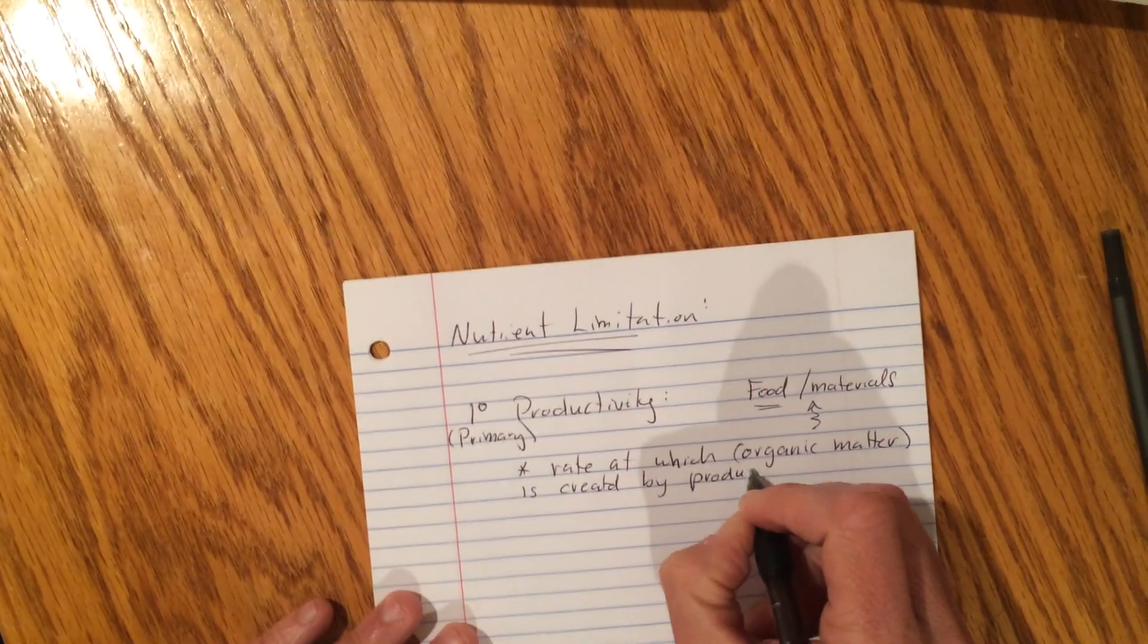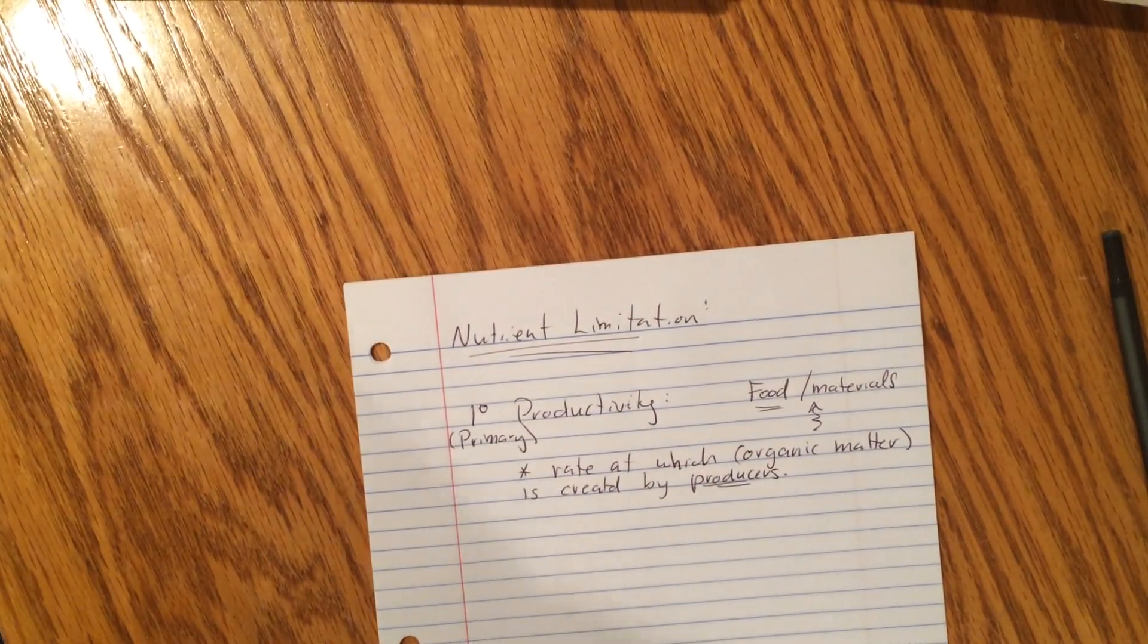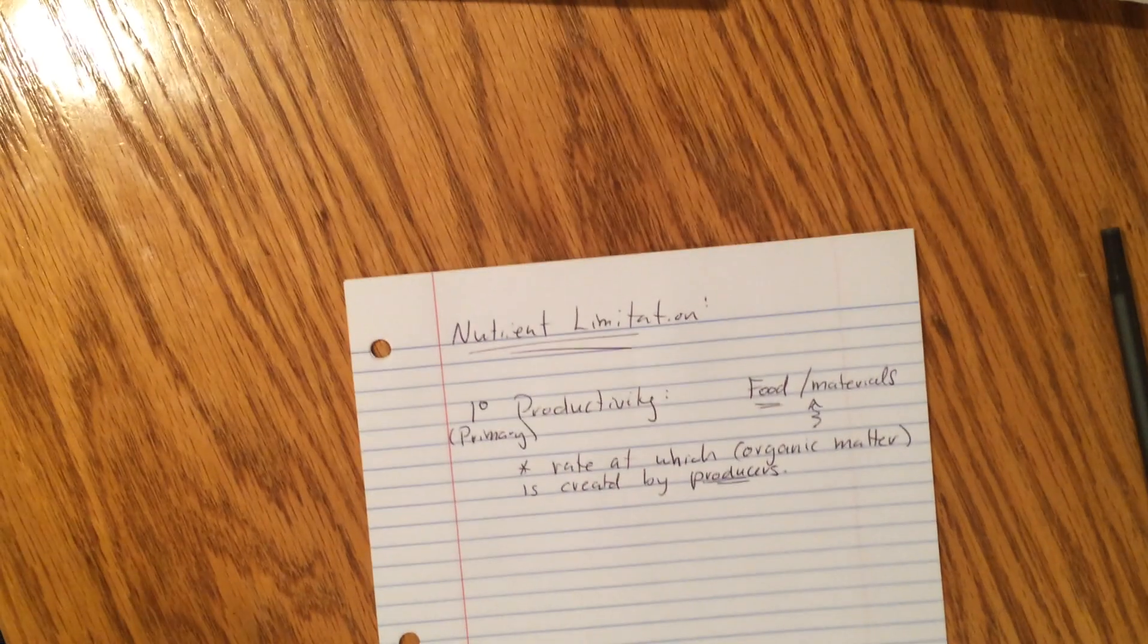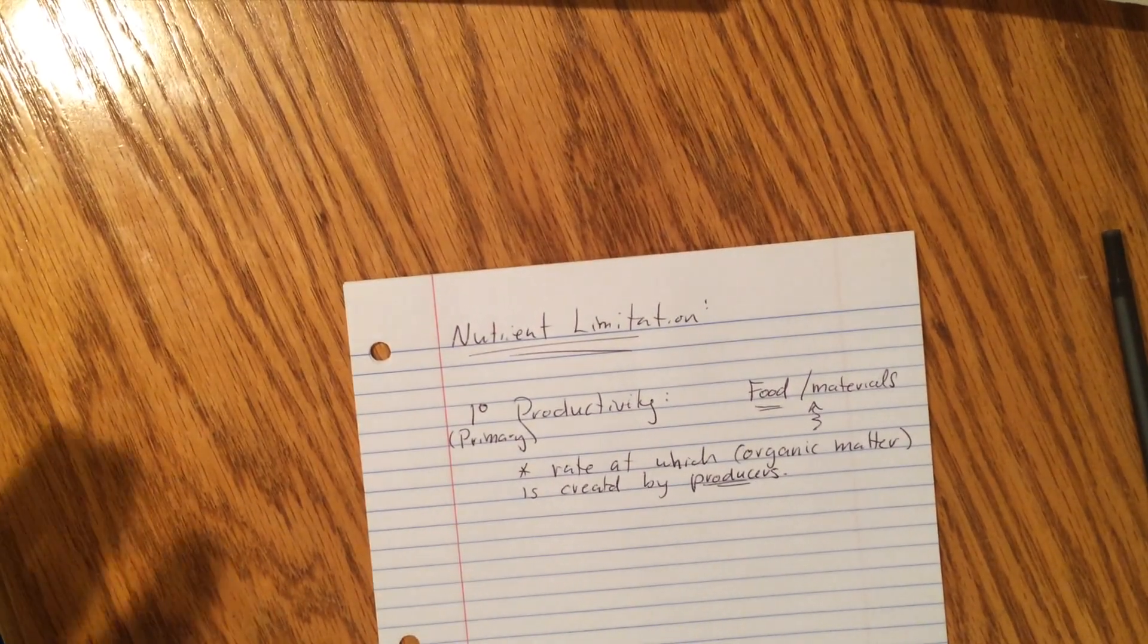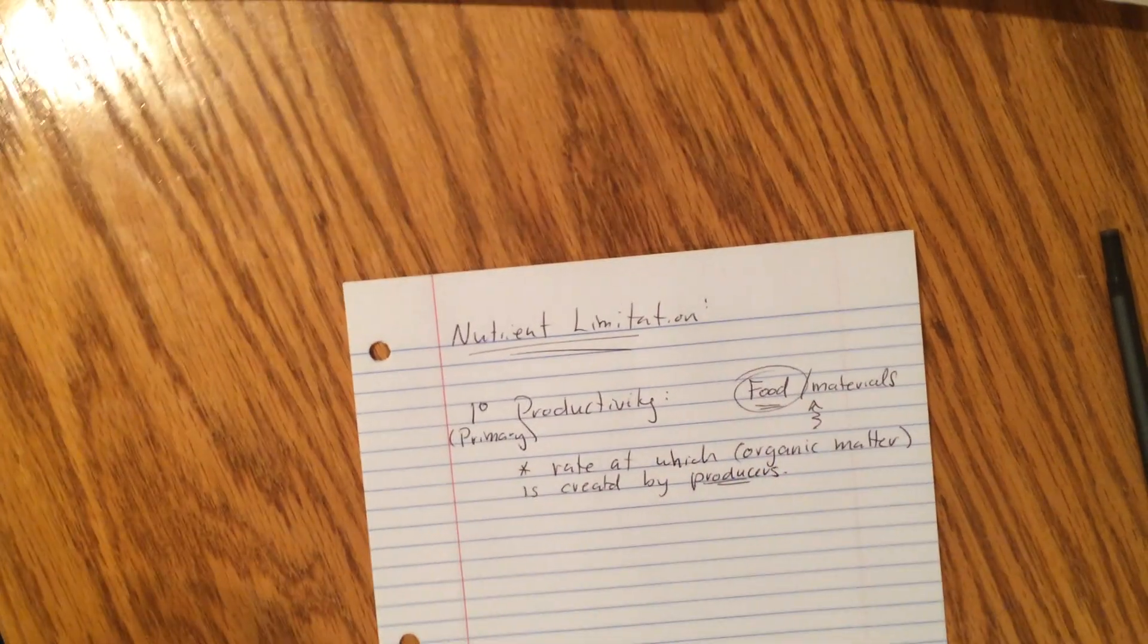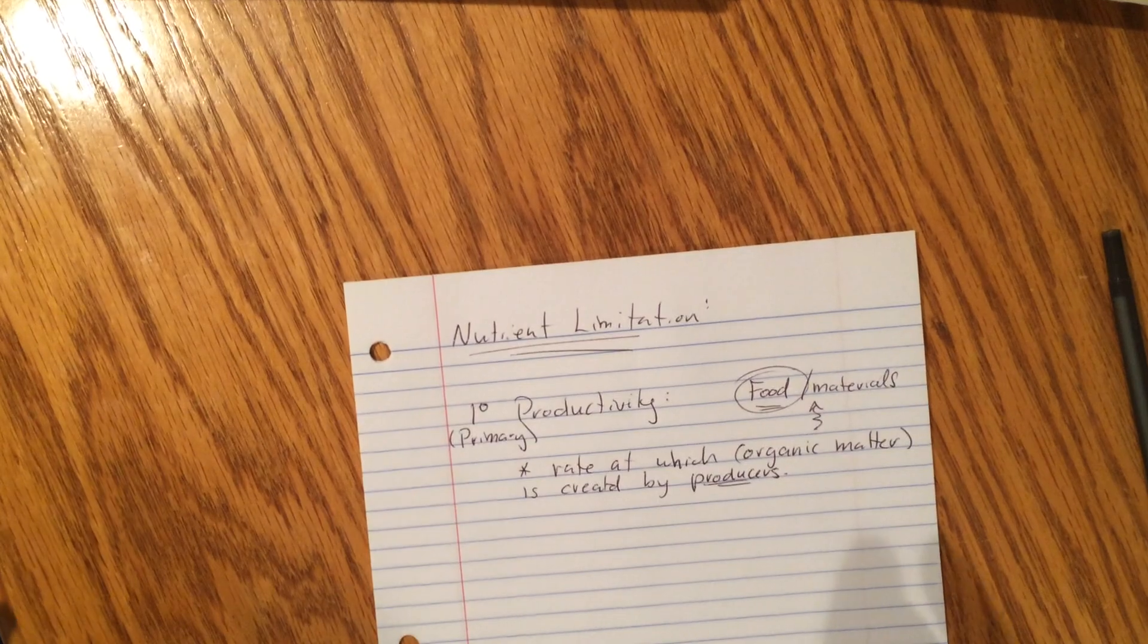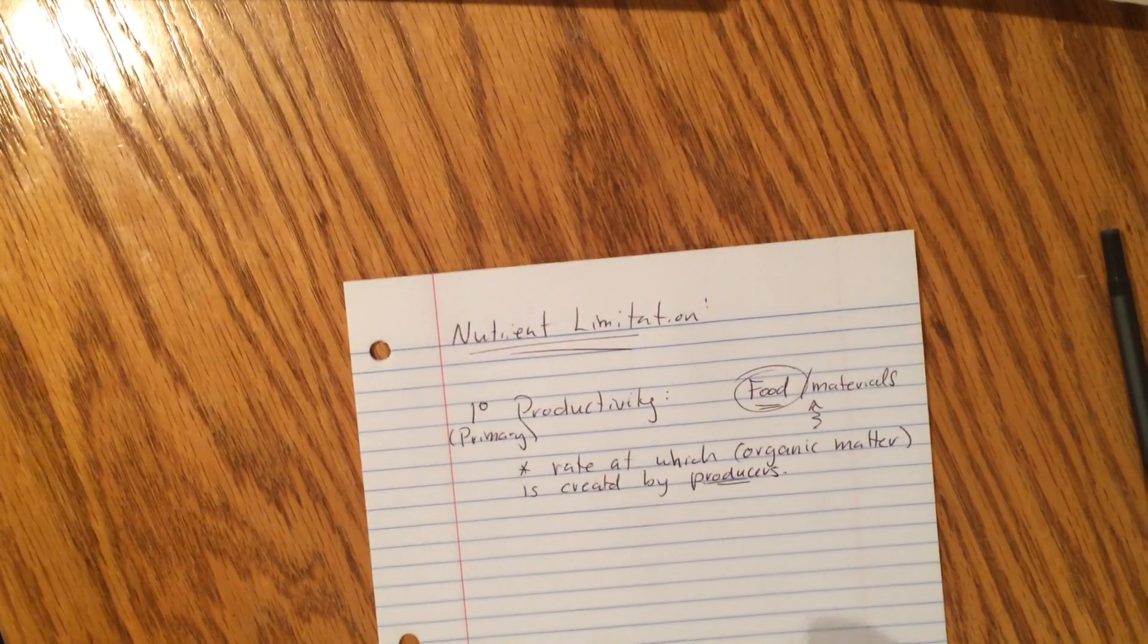So primary productivity in any ecosystem is the rate at which organic matter is created by producers. Now everybody watching this show should already know that producers are those organisms that can harness the sun's energy and make what? Sugar. What's the science name for sugar? Well, not all sugars, but glucose. And then glucose represents this food component. So primary productivity is pretty much how much food can the producers produce in the environment per unit time.